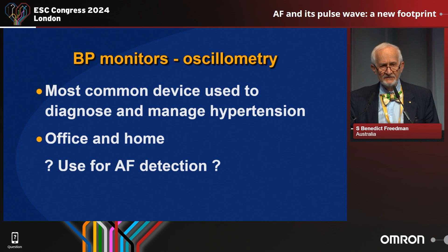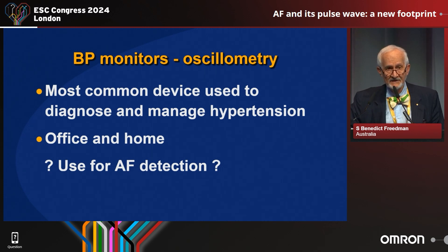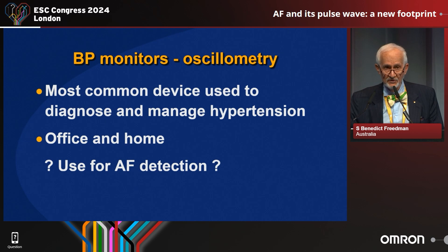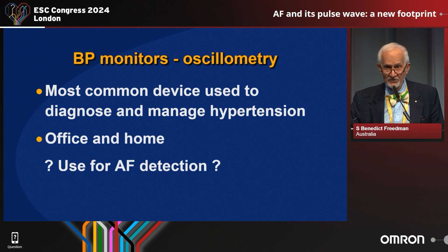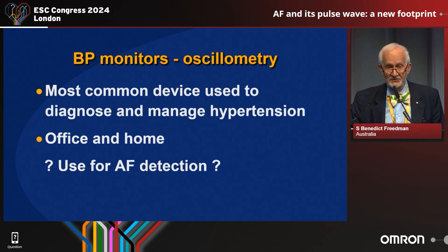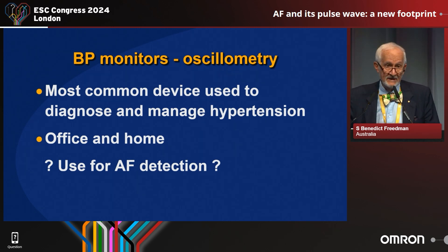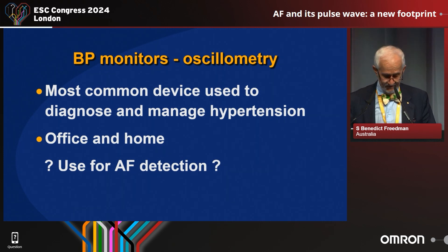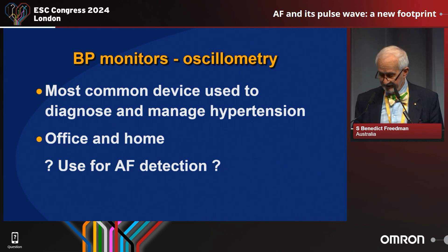As far as checking for blood pressure elevation and measuring the blood pressure, the most common type used around the world is oscillometry — it's a cuff. It goes around; you don't use a Korotkoff sound, you don't use a stethoscope. This is used everywhere in the world to diagnose and manage hypertension. It can be used both in the office and the home, and it can be used for AF detection, and that's what I'd like to speak to you about.